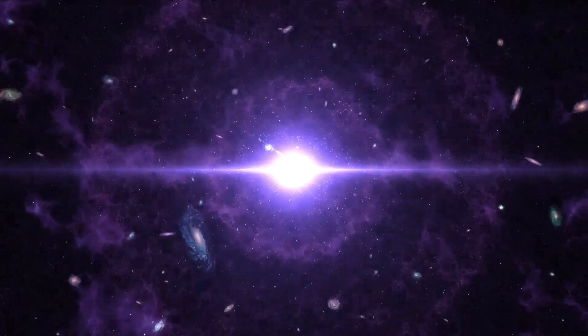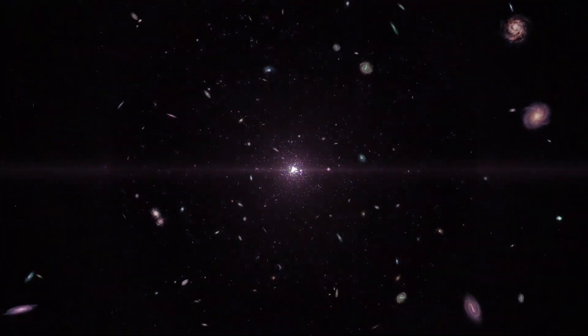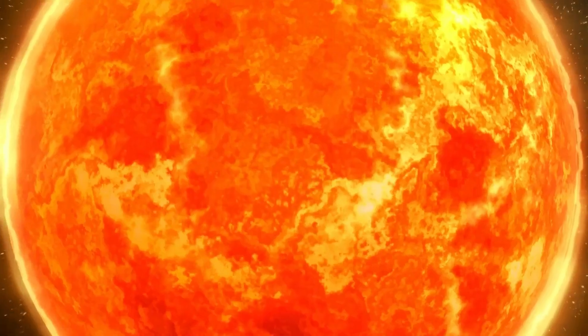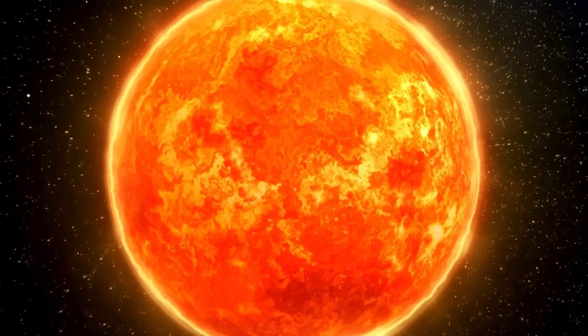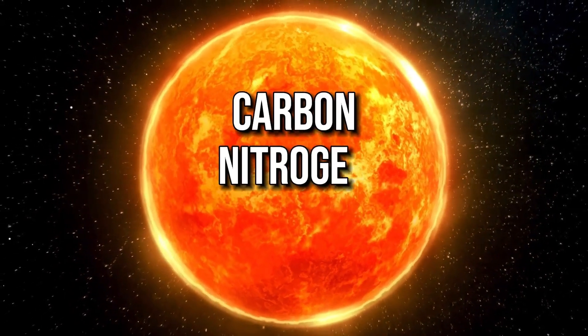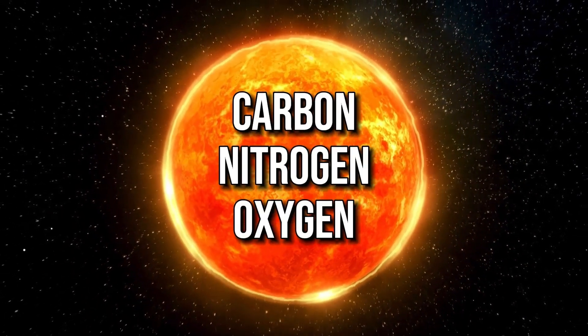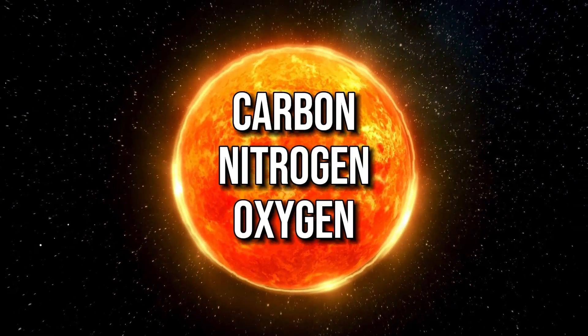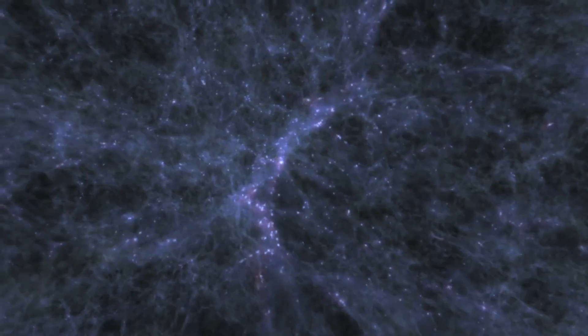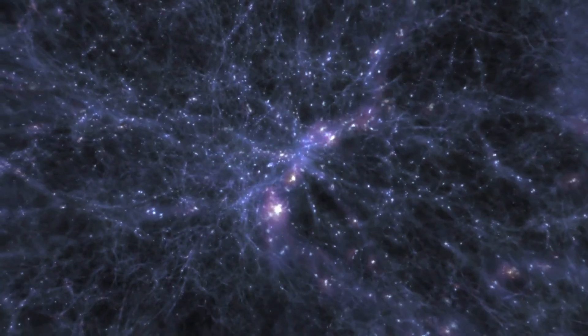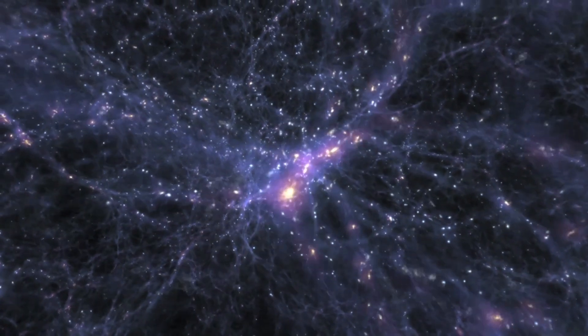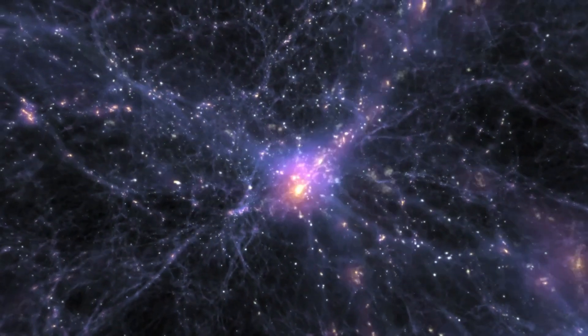Population 3 stars represent the earliest generation, devoid of heavier elements, and are crucial in understanding the universe's evolution. As the first stars, they initiated the production of crucial elements like carbon, nitrogen, and oxygen — essential for planet formation and life's existence. Moreover, they played a pivotal role in reionizing the early universe, marking a crucial phase in cosmic evolution.